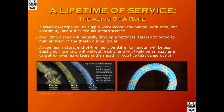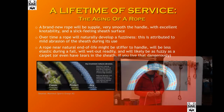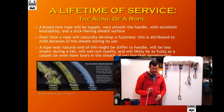The aging of a rope is also worth considering alongside dry treatment levels. A brand new rope will be very supple, smooth to handle, with excellent knotability and a slick — almost Teflon-like — feeling, especially dry ropes. Over time, the rope will develop mild fuzziness from normal wear. A rope near the natural end of its life will be stiffer to handle, less elastic during a fall so falls feel harder, and even dry rope will wet out really readily. It would likely be as fuzzy as a carpet — if you get to that point, you're living dangerously.